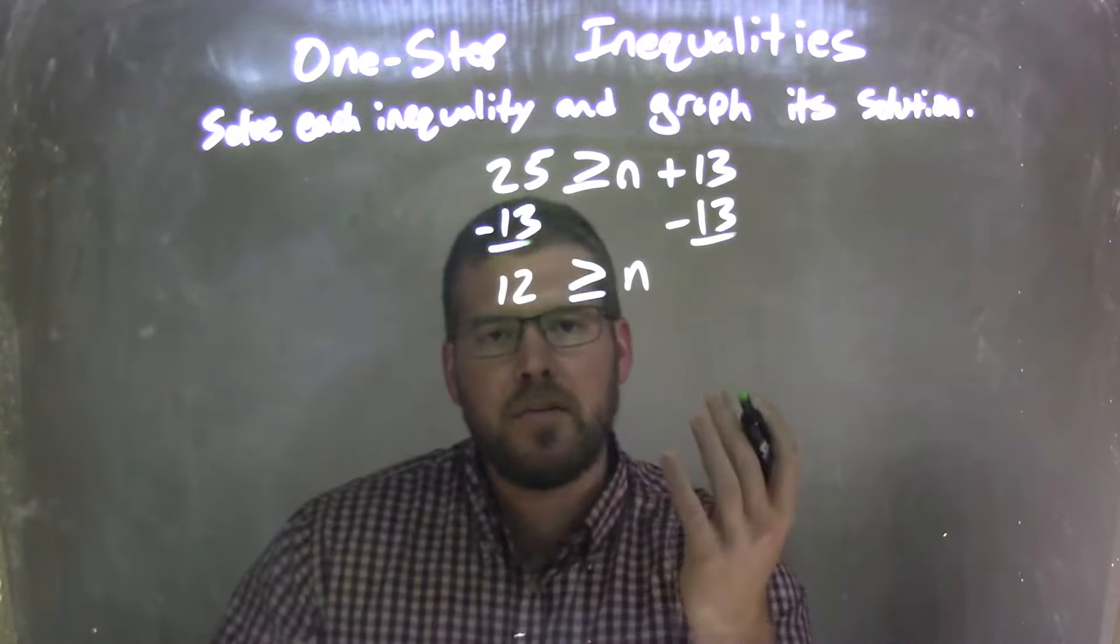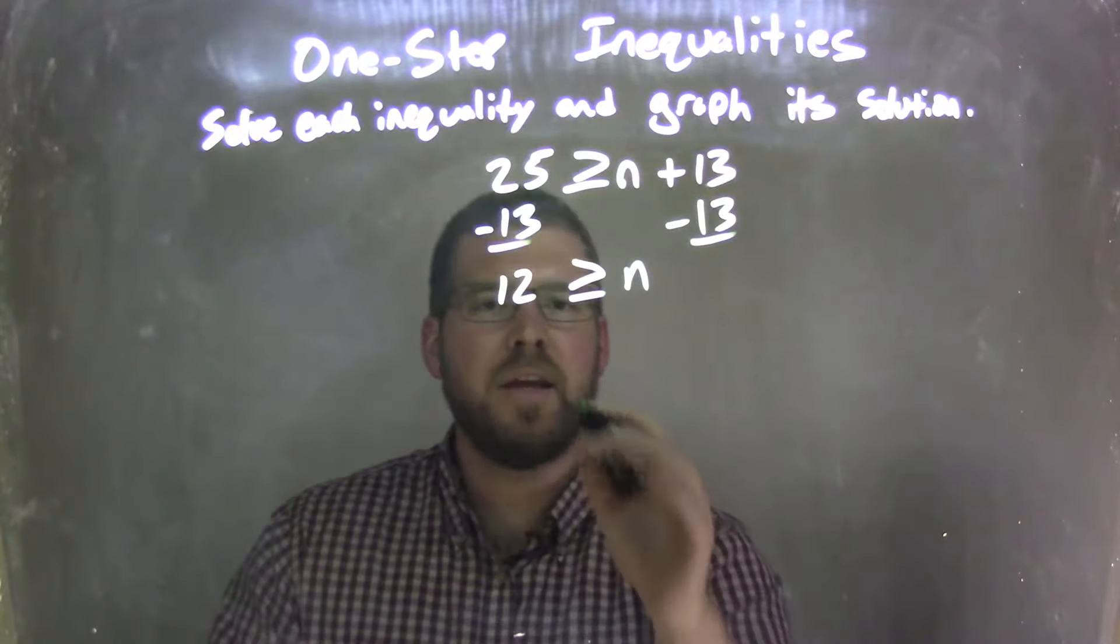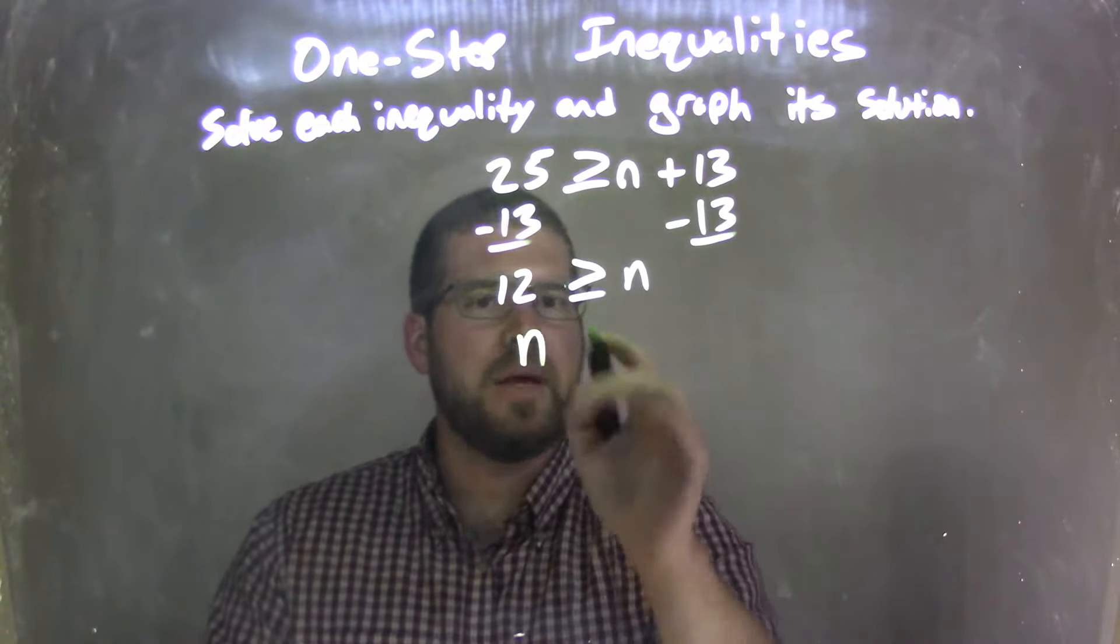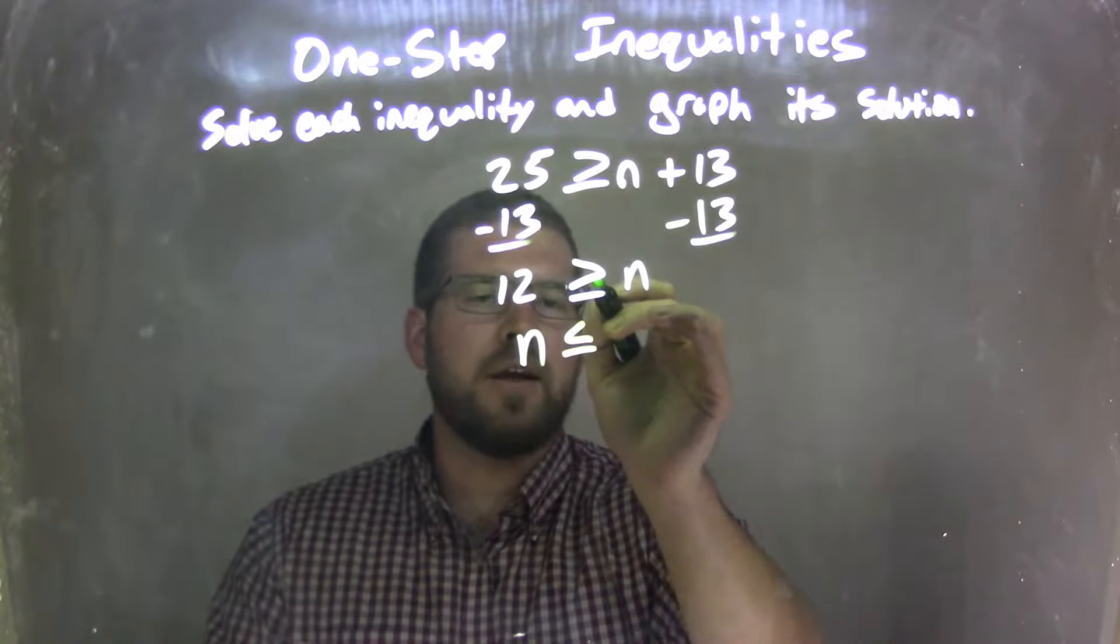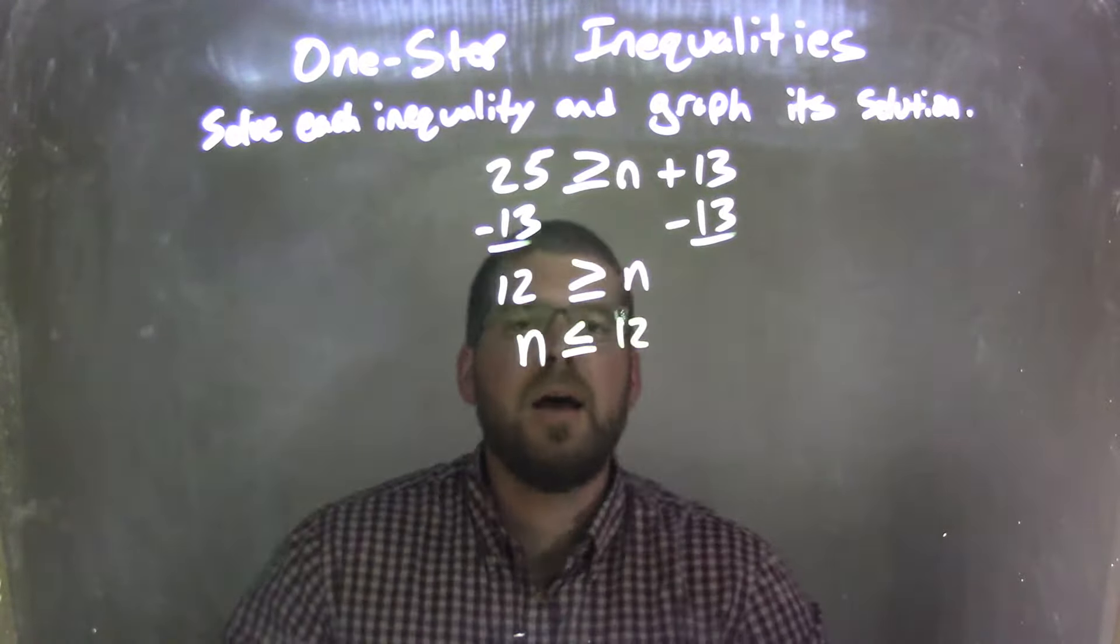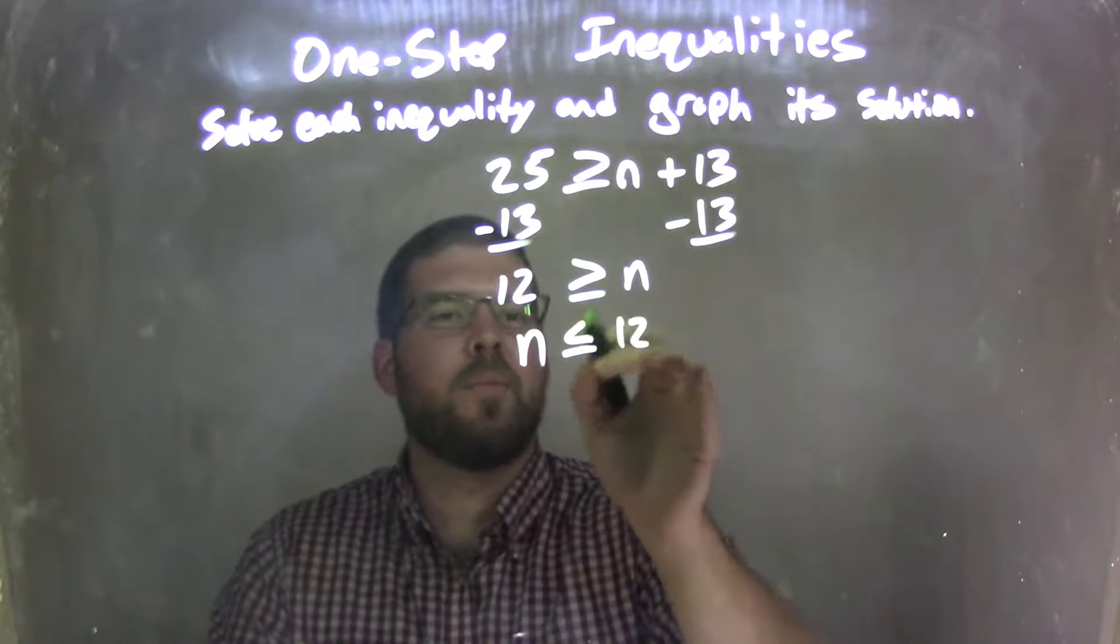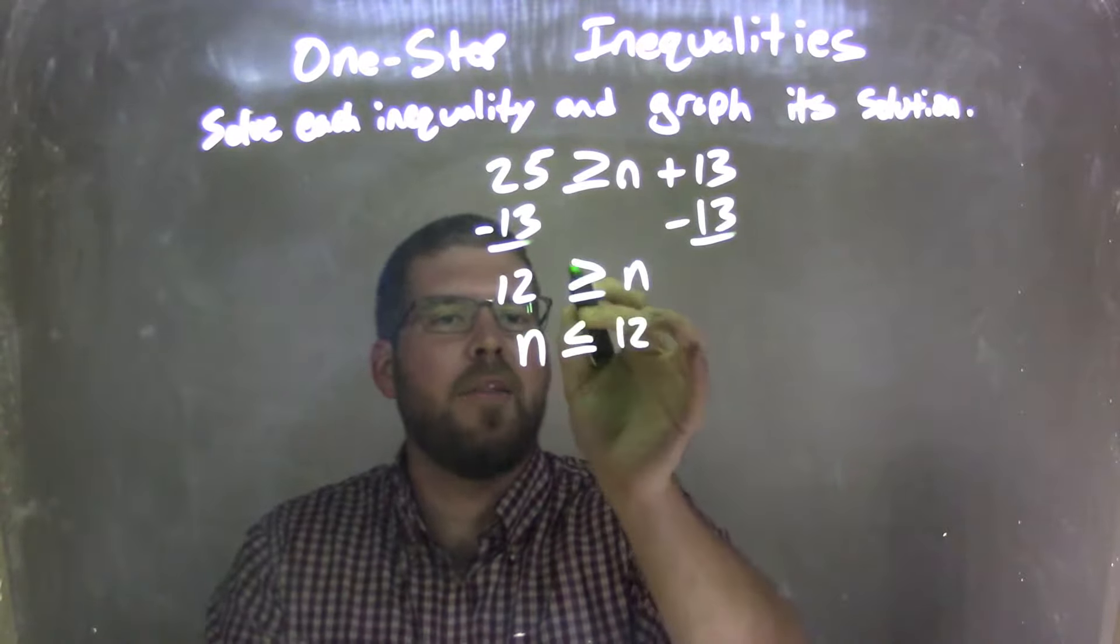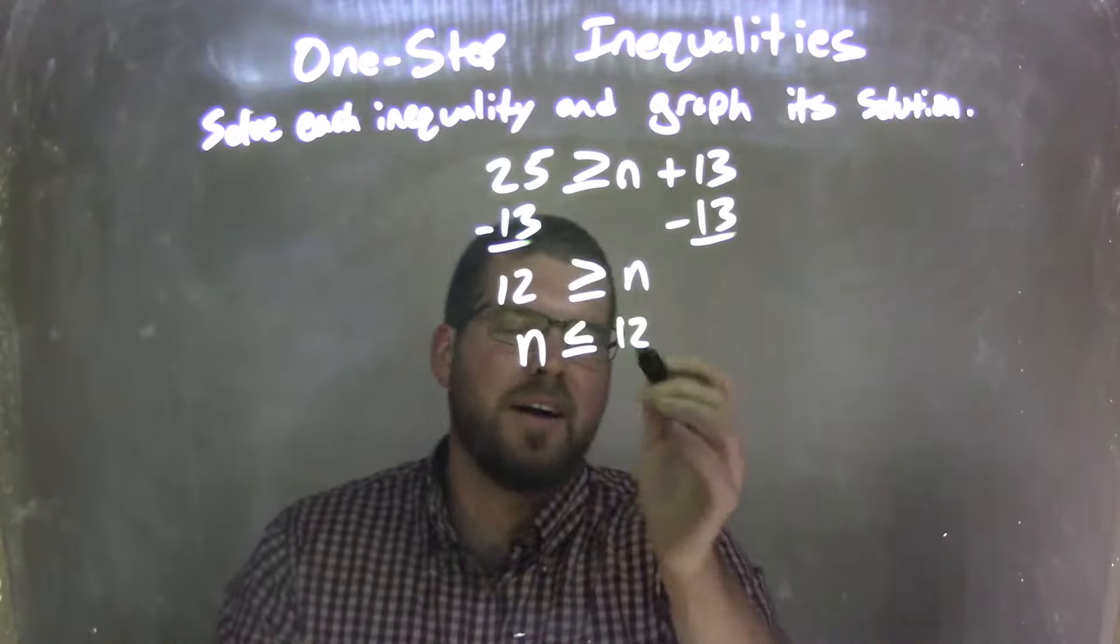Now I'm going to rewrite this to have n come first, because that looks nice and neat. So we have n here, we need to flip the inequality when we do that, so now instead of greater than or equal to, it's less than or equal to, and the 12 now is on the right. I like to think about it as the pointy side stays with the n, and the open side stays with the 12.